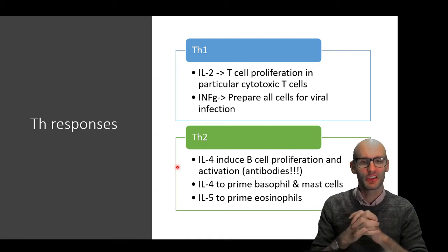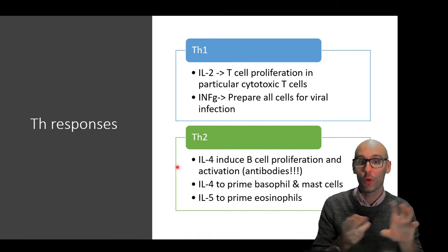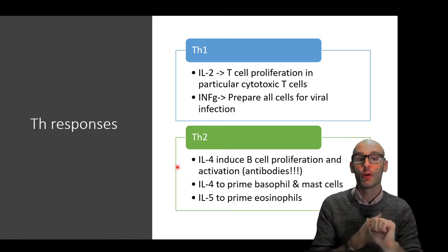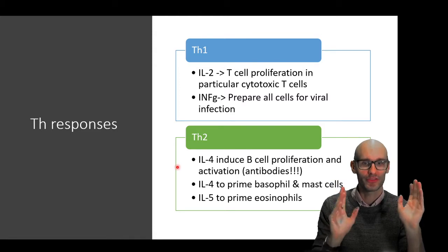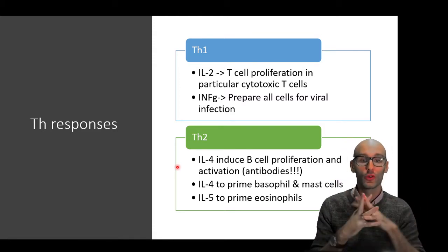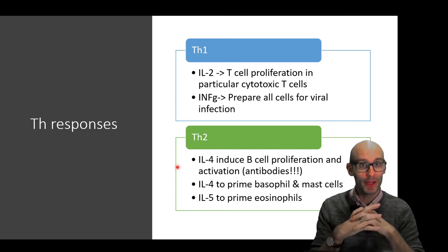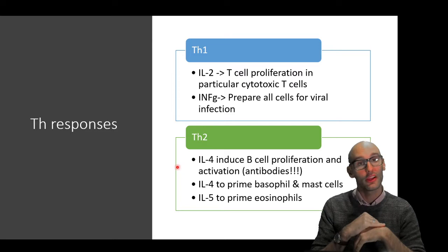So next we've got Th2. Th2 is famous for two main cytokines, IL-4 and IL-5. IL-4 causes B cell proliferation and activation, and so that's antibody production. IL-4 is all about antibody protection. IL-4 also primes basophils and mast cells, and IL-5 primes eosinophils.